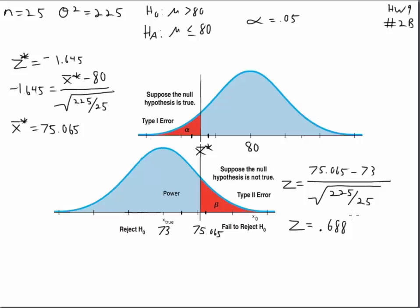And what we find now is that the z score for this 75.065 is equal to 0.688. So let's go to our table and look up 0.69, that's the closest number we have, and we find that the CDF of z equals 0.69 is equal to 0.7549. So that is going to equal our power.